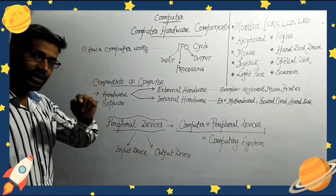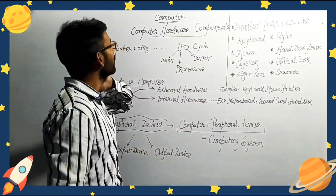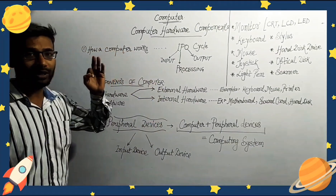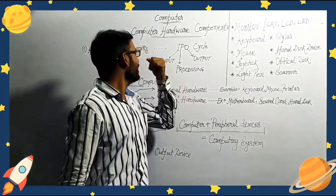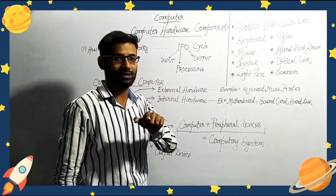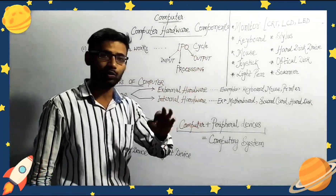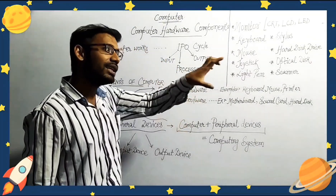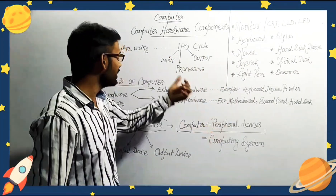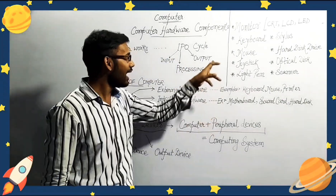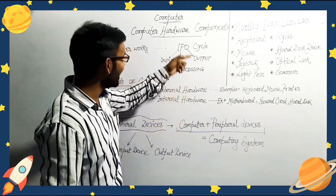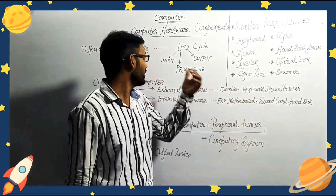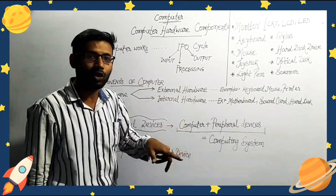First thing first — how a computer works. If we are talking about computer hardware, we need to think about how a computer works. The basic fundamental thing that occurs is the IPO cycle, which is also known as the Input Processing Output cycle. Whatever task you are giving to a computer, the computer receives those commands in the form of input, then processes them, and after that gives the output.